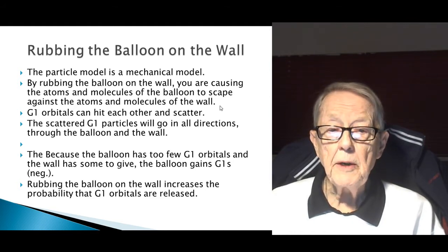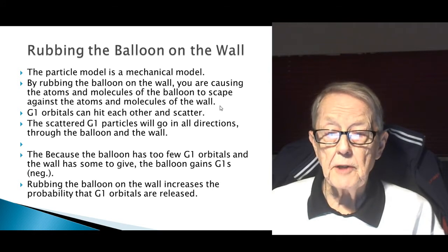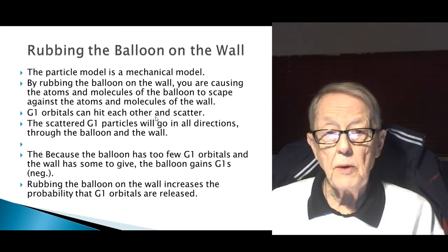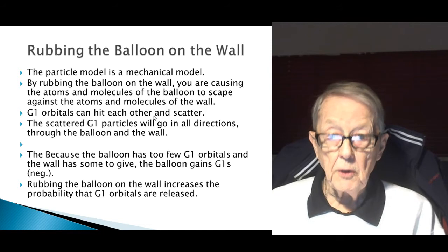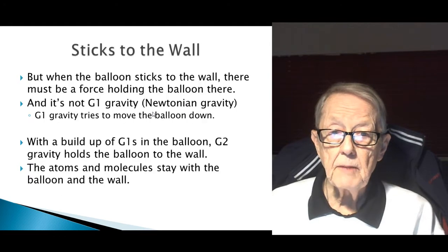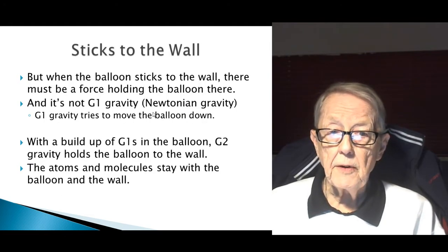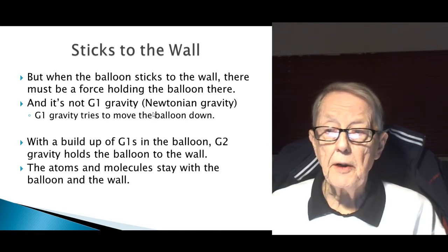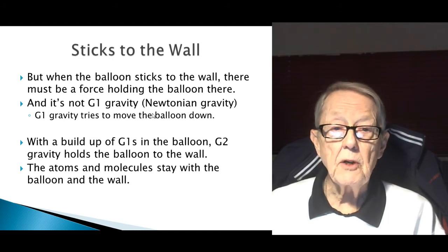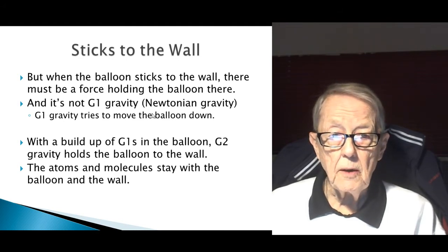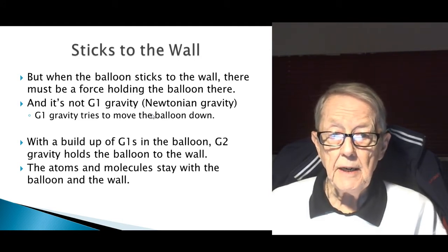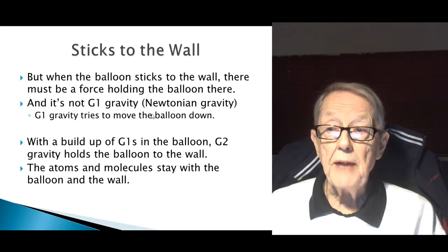Rubbing the balloon on the wall increases the probability that G1 orbitals are released, so you have a better chance of the balloon sticking to the wall when you rub it on the wall or on some other object — people often use their hair. But when the balloon sticks to the wall, there must be a force holding it there. And it's not G1 gravity, which is our term for Newtonian gravity, because G1 gravity tries to move the balloon down to the floor.